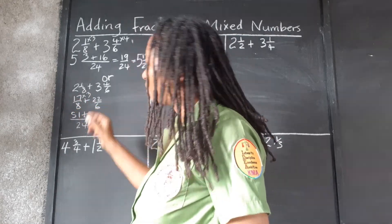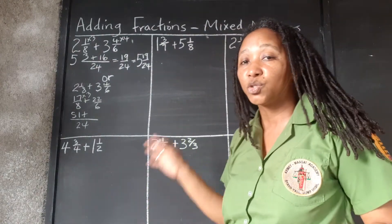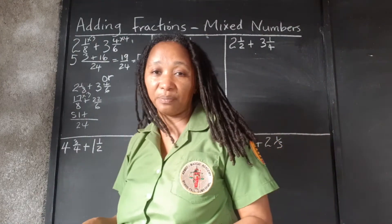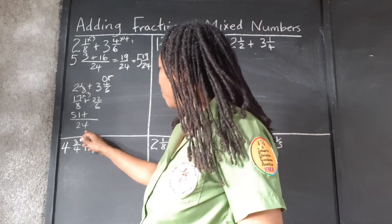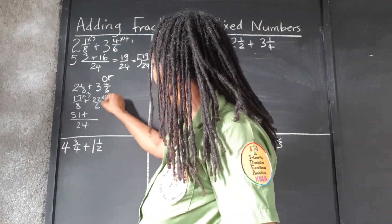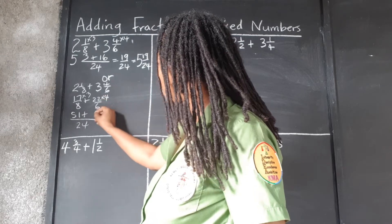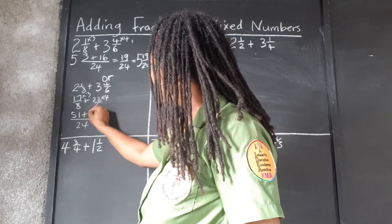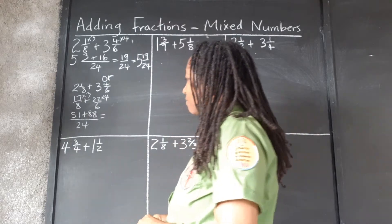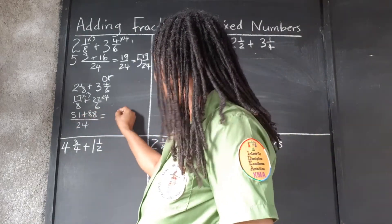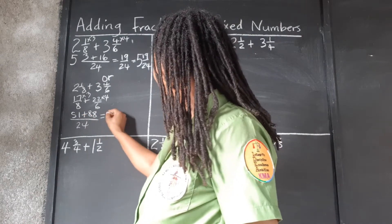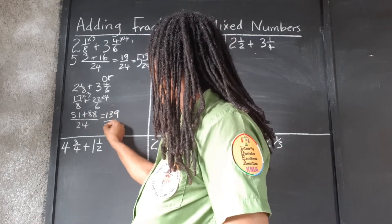And you can go to the side to get your rough work paper to work the multiplication parts. 6 into 24 goes 4. Now we're going to multiply 22 times 4. 4 times 2 is 8. 4 times 2 is 8. And we're going to add 51 plus 88. So 8 and 1, 9. 8 and 5, 13 over 24.